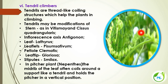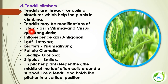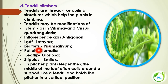The next kind of climber is tendril climbers. Tendrils are thread-like coiling structures that help plants climb. Tendrils can be modified from any organ: stem — as in Cissus quadrangularis; inflorescence axis — as in Antigonon; leaf — as in Lathyrus; leaflets — as in Pisum sativum; petiole — as in Clematis; leaf tip — as in Gloriosa; and stipules — as in Smilax.